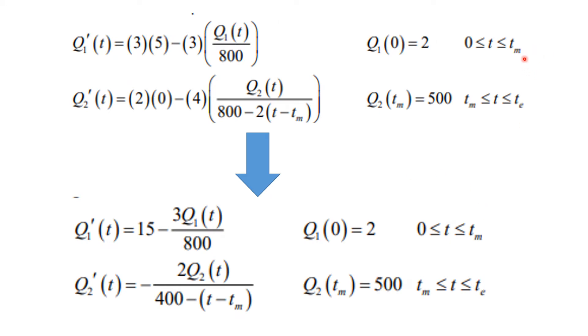Well, clearly there's a time when things change, and we're going to call it time of intervention. We're going to call that T sub m up here, and that will happen whenever the bad stuff gets up from two ounces in the tank initially up to 500 ounces of the bad stuff, and then we start flushing it. So before that intervention time,